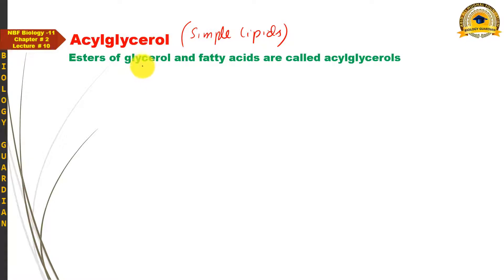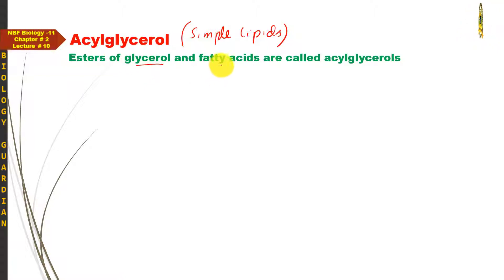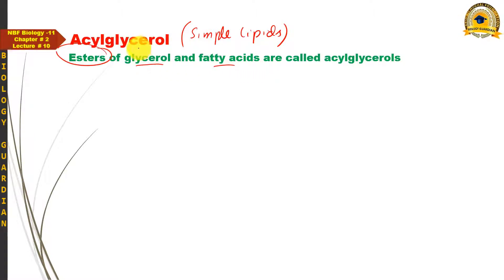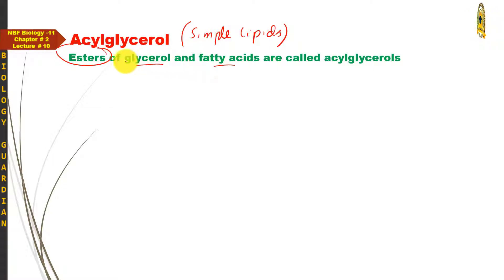Acylglycerols میں alcohol ایک specific type کا ہوگا اور اس alcohol کو glycerol کہتے ہیں۔ کوئی اور alcohol acylglycerols میں موجود نہیں ہو سکتا۔ البتہ fatty acid کوئی بھی ہو سکتا ہے۔ لہٰذا یاد رکھیں کہ acylglycerols are esters of glycerol and fatty acid۔ ان دونوں کو پہچاننا ضروری ہے تاکہ ہم acylglycerols کو easily identify کر سکیں۔